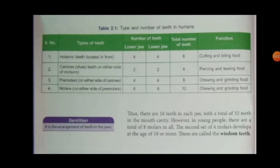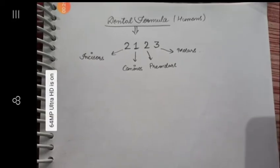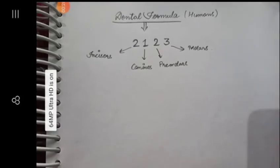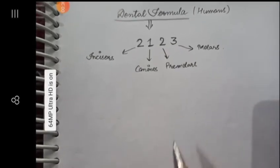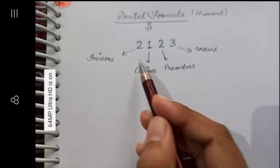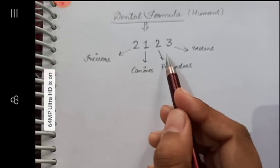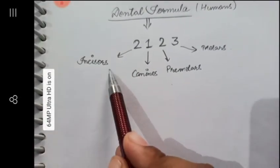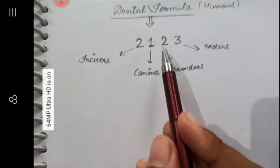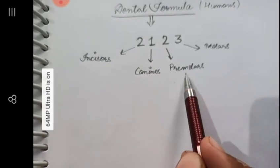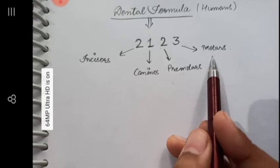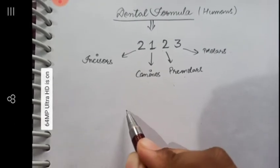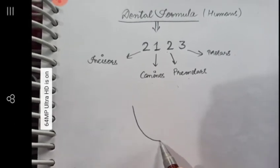From this we can understand how the dental formula 2-1-2-3 was derived. In the dental formula 2-1-2-3: 2 stands for the incisors, 1 stands for the canines, 2 stands for the premolars, and 3 stands for the molars. We are having 2 jaws — the upper jaw and the lower jaw.